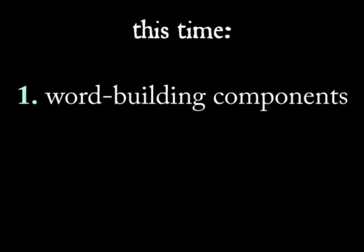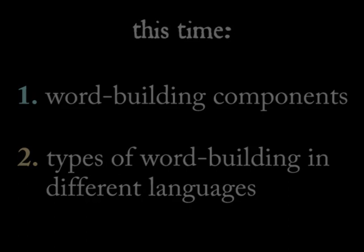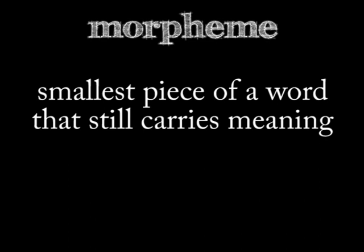The first topic is going to be the components of words, and the second will be a way to classify types of languages based on how they build words. Two concepts to get you started: the first is the morpheme, which is our basic building block in the Grammar of Words. A morpheme is the smallest meaningful unit you can break a word down into.